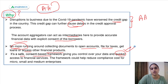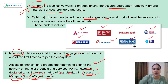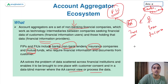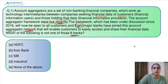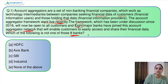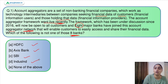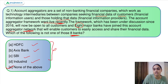So this is the basic objective of why we went ahead with account aggregation. The question asks which of these is not a bank that is part of the eight banks which have joined this framework recently. HDFC was a part, Axis Bank was a part, and SBI was also a part. So the answer is option E — none of the above, meaning there is no bank among the options that is not part of the eight banks.